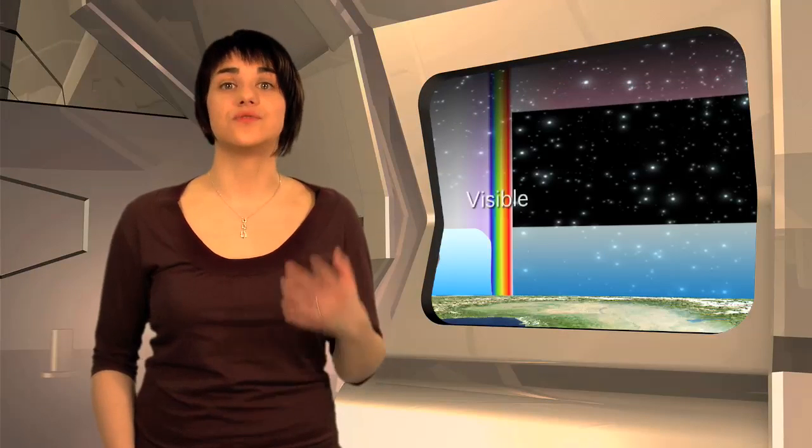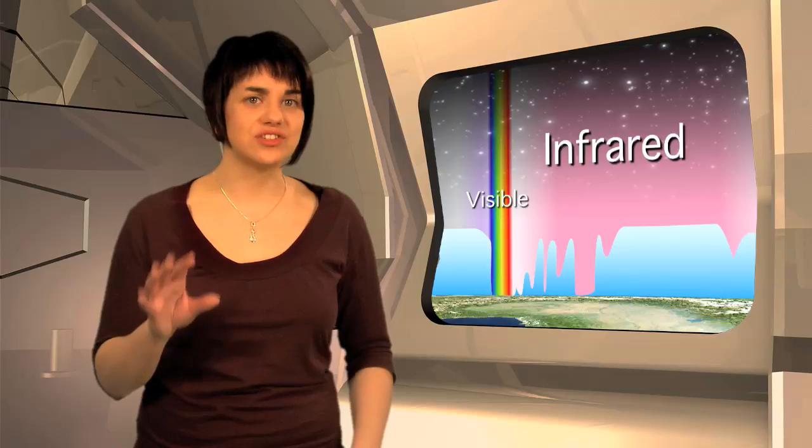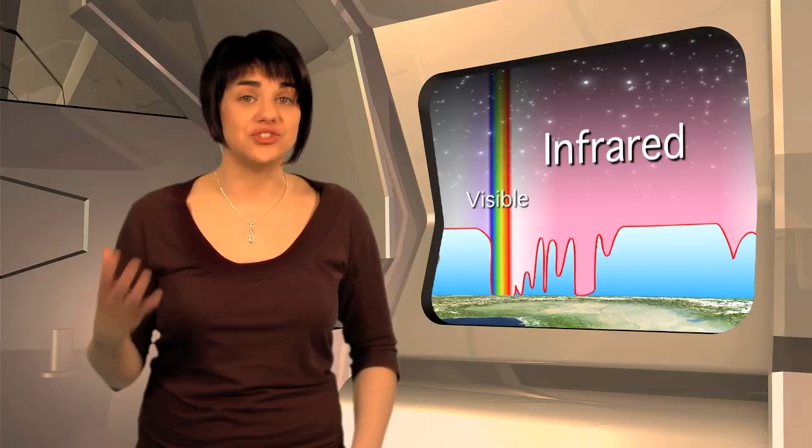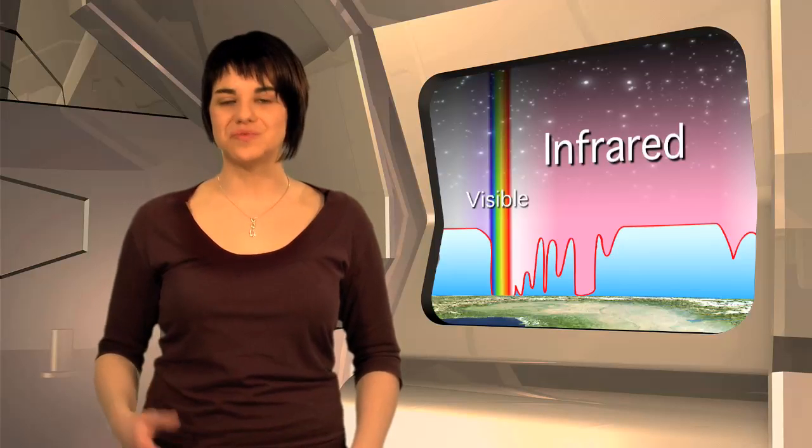Observing the infrared universe from Earth is extremely difficult. The light at almost all infrared wavelengths is absorbed by molecules in the atmosphere. And there is another big problem. The atmosphere emits infrared radiation too, drowning out that of the target celestial object. The clearest view of the infrared universe can be achieved from space.